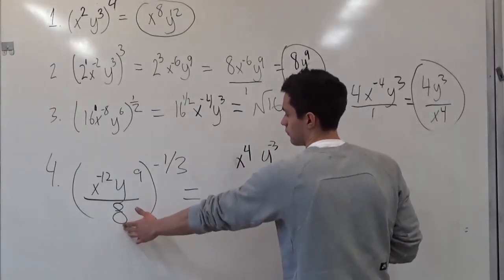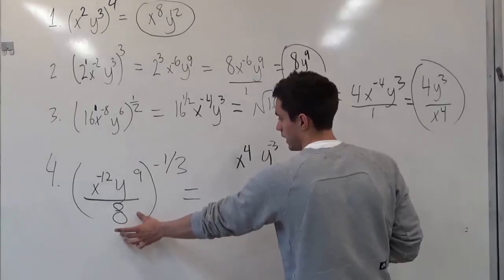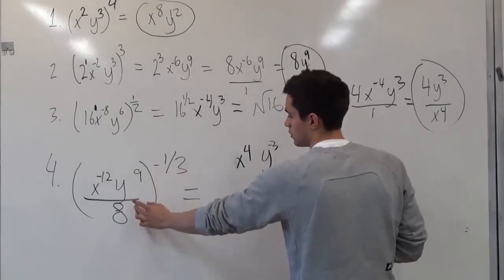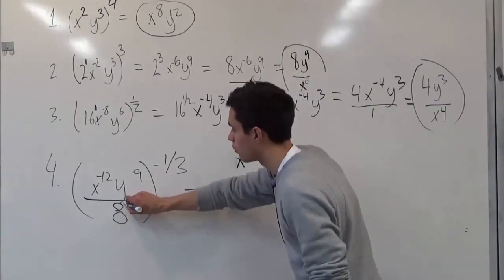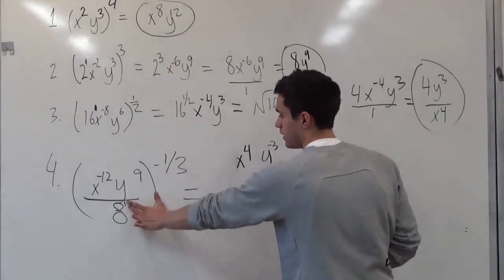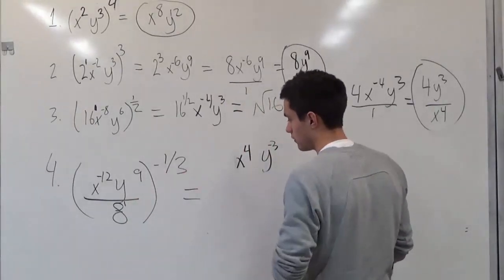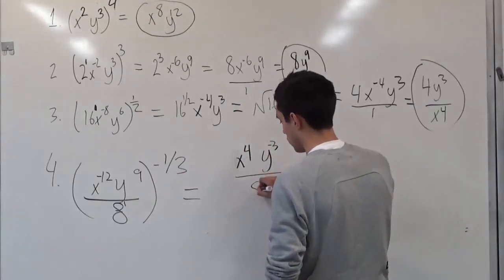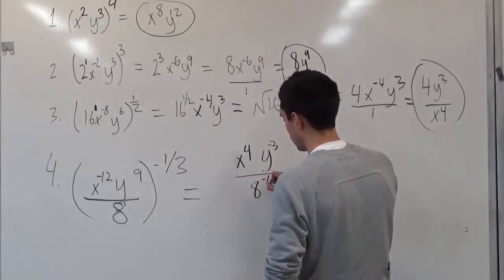So here we see the whole number. So 8 times, so let's pretend this has an imaginary 1. So 1 times negative 1 third, that will give us 1 third. So 8 is negative 1 over 3.